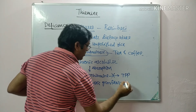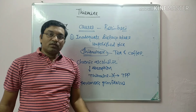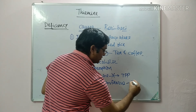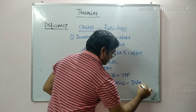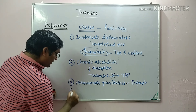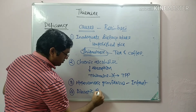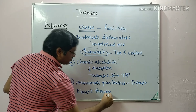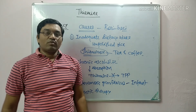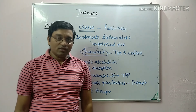Other causes include severe hyperemesis gravidarum, which leads to thiamine deficiency in the infant. In diuretic therapy, there is loss of thiamine through urine, causing nutritional deficiency. So these are the four important causes of thiamine deficiency.